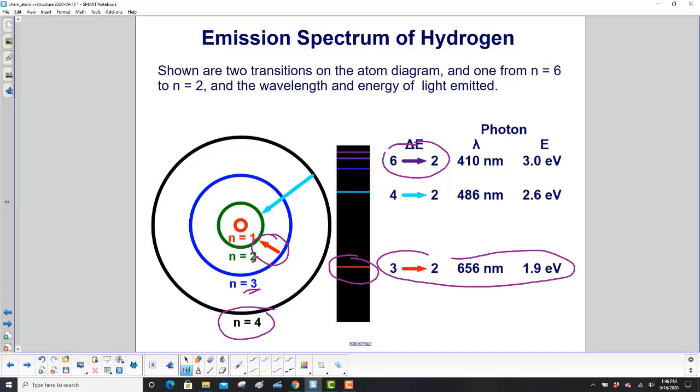Then we have 4 to 2, which is a higher energy transition. The arrow here is bigger, and that's a blue line. We color-coded the arrows there. That's 486 nanometers, 2.6 electron volts. See how that's greater than 1.9? And then if we had 6 somewhere out here, that would go from 6 down to 2. And that would be a purple line. It's 410 nanometers, an energy of 3 electron volts.